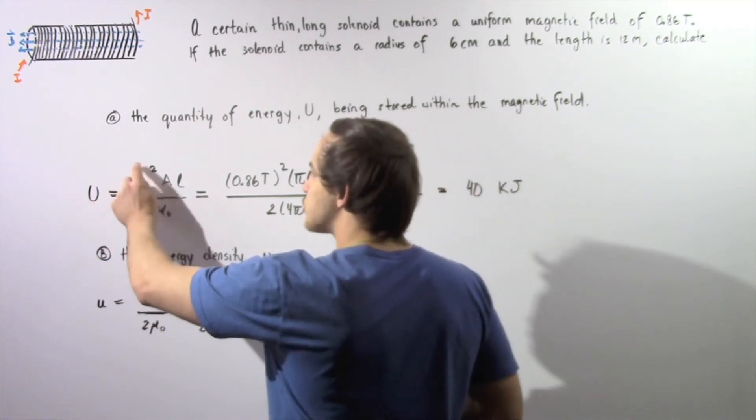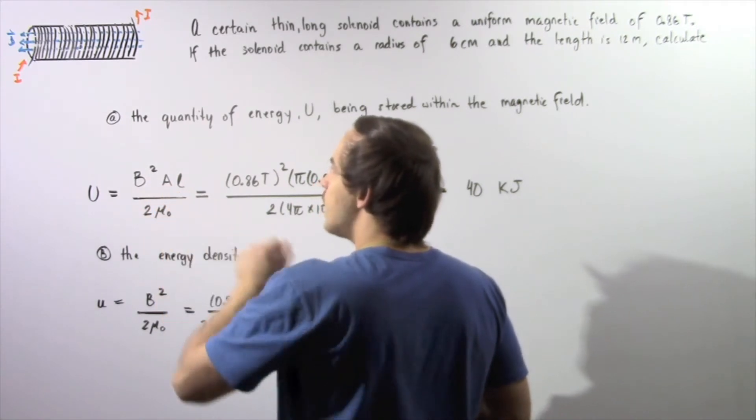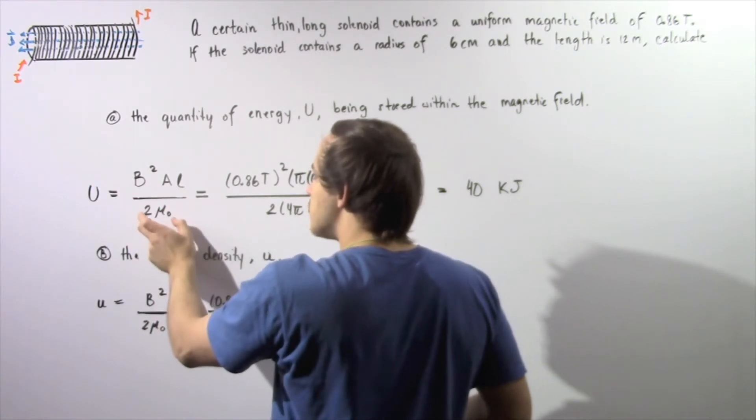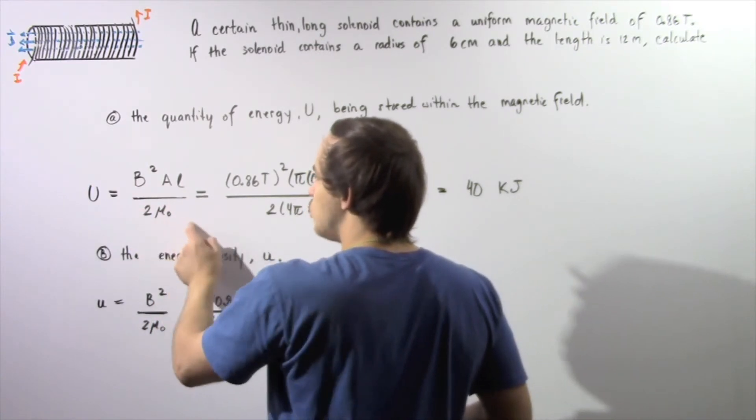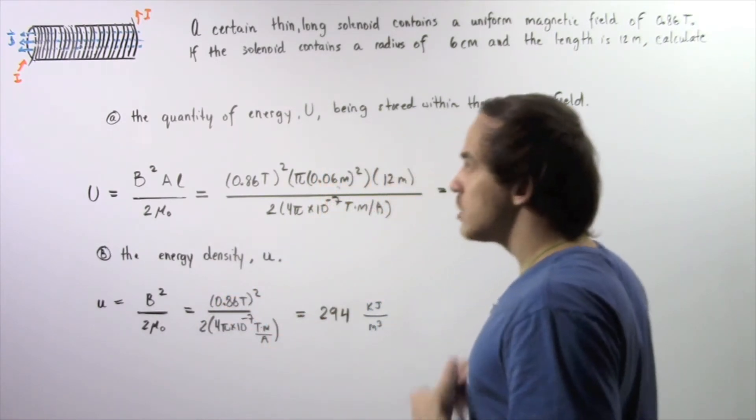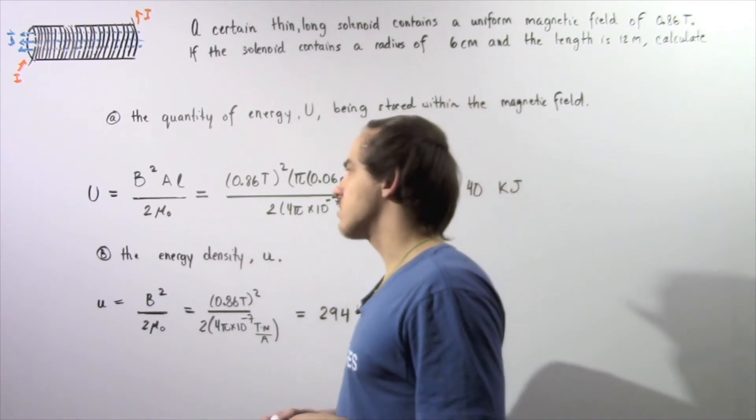Our magnetic field squared multiplied by the cross-sectional area A multiplied by the length of our solenoid L, divided by 2 times the permeability of free space mu-naught, gives us our uppercase U. It gives us the quantity of energy stored within our magnetic field inside our solenoid.